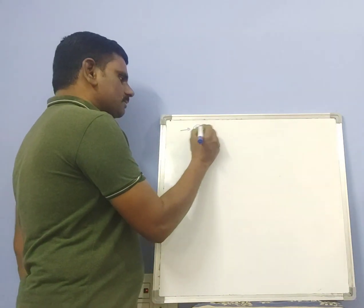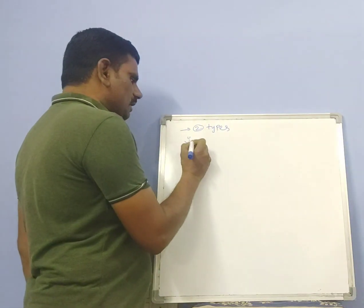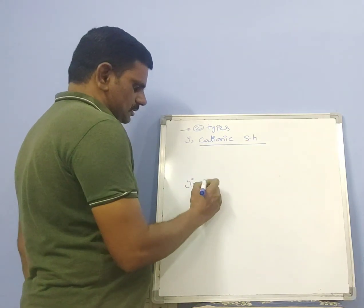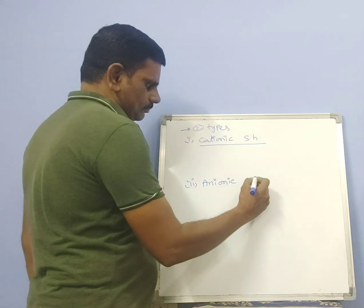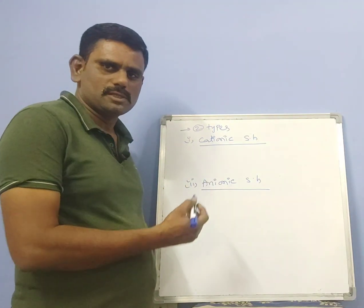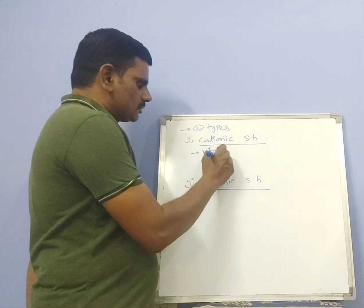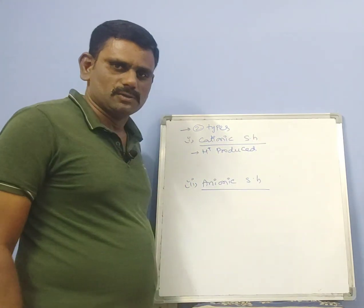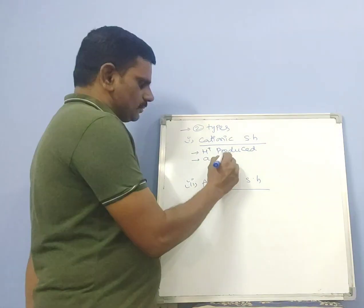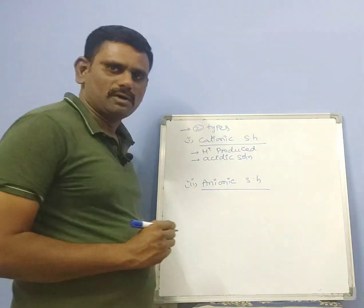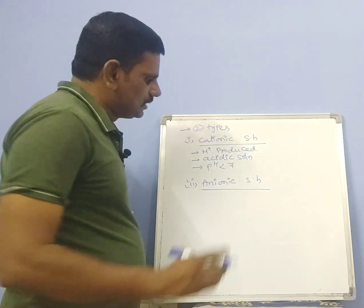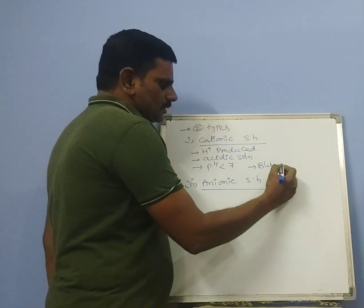Salt hydrolysis is of two types: cationic salt hydrolysis and anionic salt hydrolysis. In cationic salt hydrolysis, the cation reacts with H₂O to produce H⁺ ions. H⁺ ions are produced in the solution, which means the solution is acidic in nature. For an acidic solution, pH is less than 7, and blue litmus paper turns red.